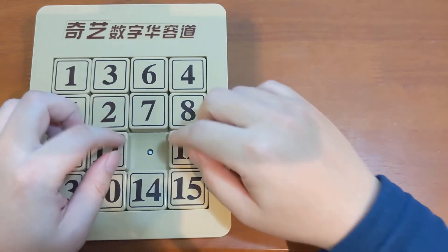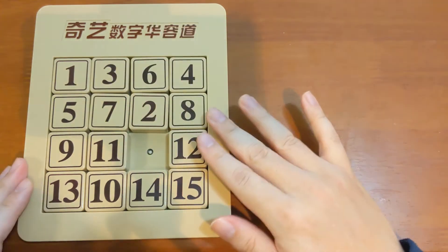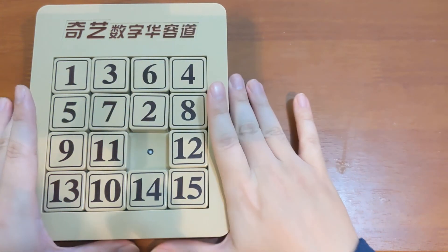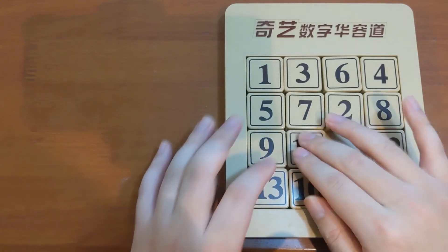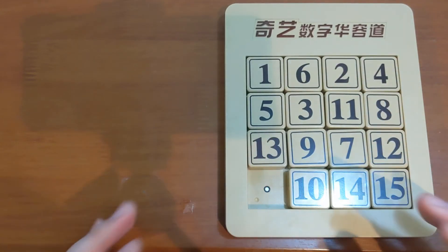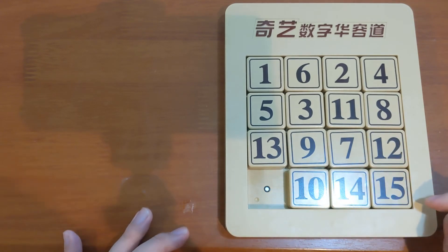However, if we take two pieces and swap them, this breaks the rule. Now this case belongs to the odd nation. If you then slide tiles normally, it will stay in the odd nation. It cannot go back to the even nation.